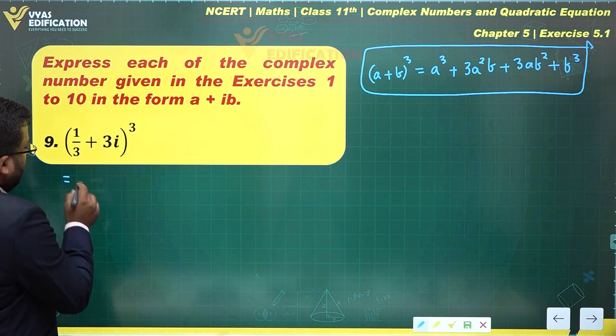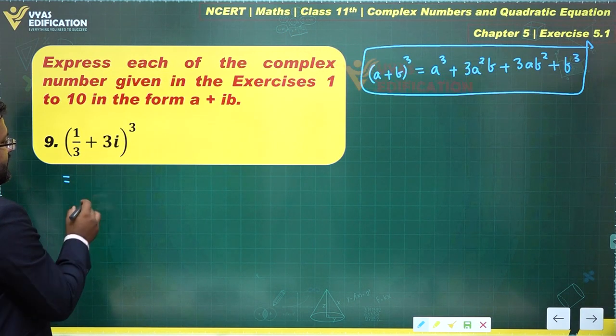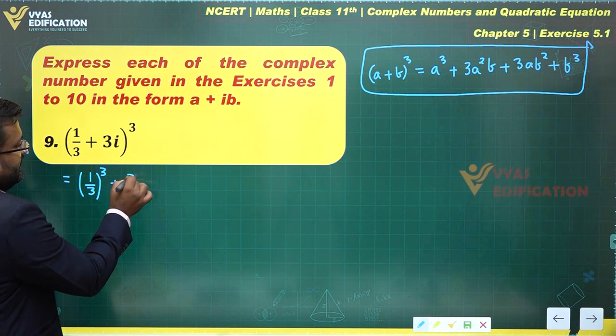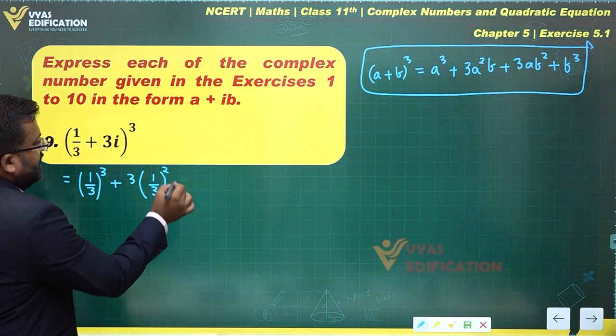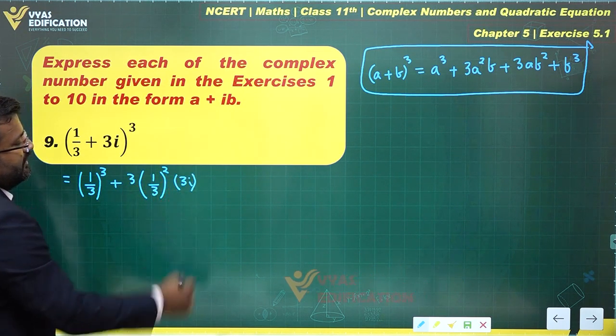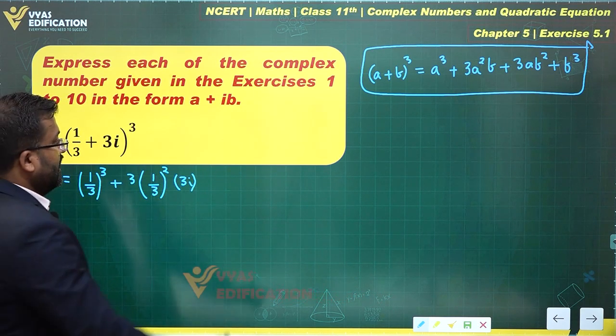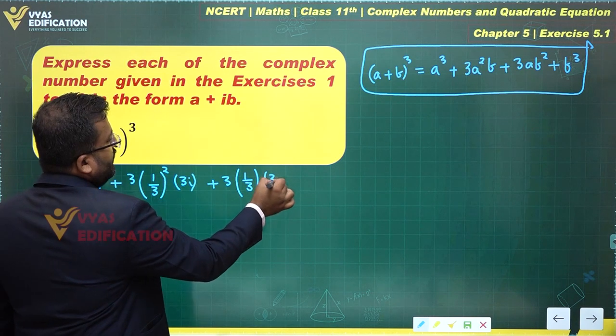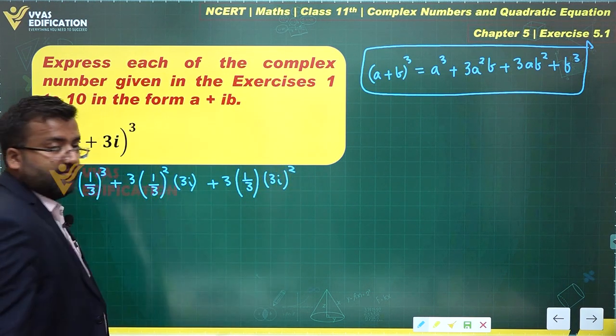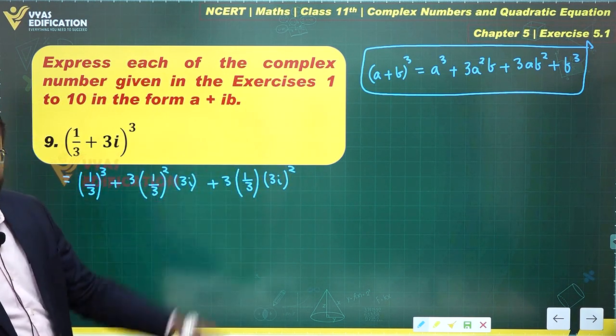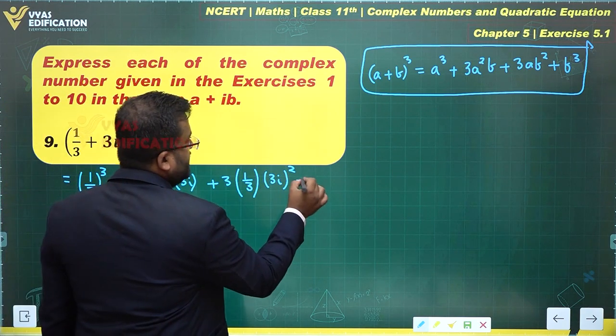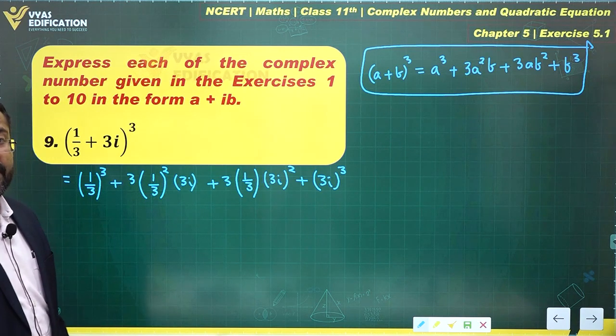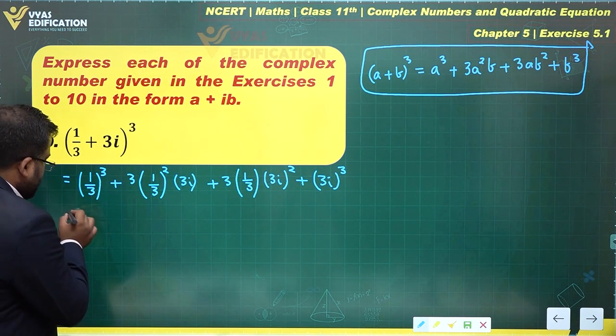This is (a+b)³. What will they simplify to? This is a³ + 3a²b plus 3ab² and plus the last term, 3i³, that is b³. This is what we'll simplify. This becomes 1/27, since 3³ equals 27.